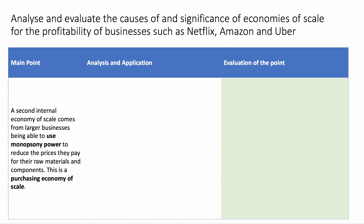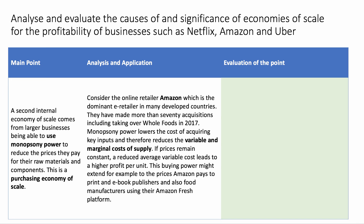My second point: another reason why economies of scale are significant for profit. A second internal economy of scale comes from bigger businesses being able to harness monopsony power to cut the prices they pay for things like raw materials and component parts. This is called a purchasing economy of scale. Consider the online retailer Amazon, a dominant e-retailer in many countries including the United States.